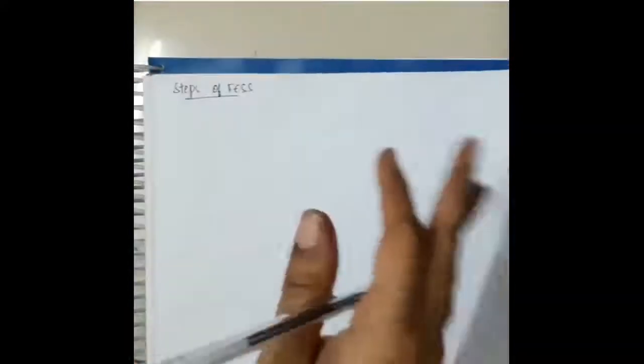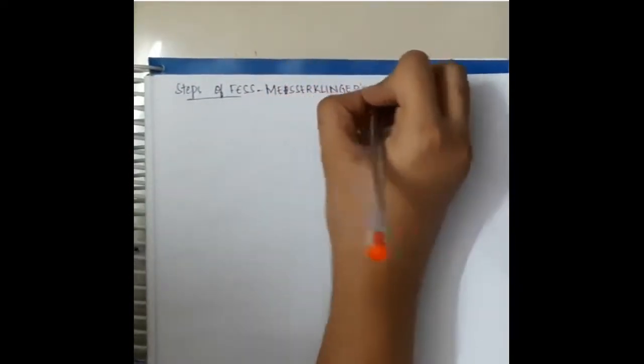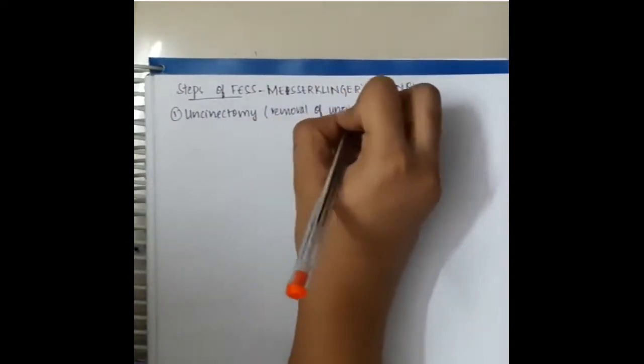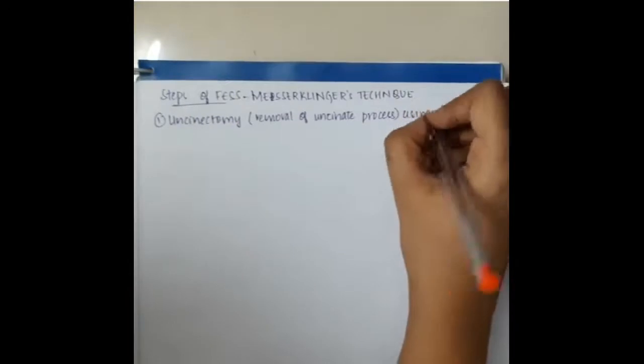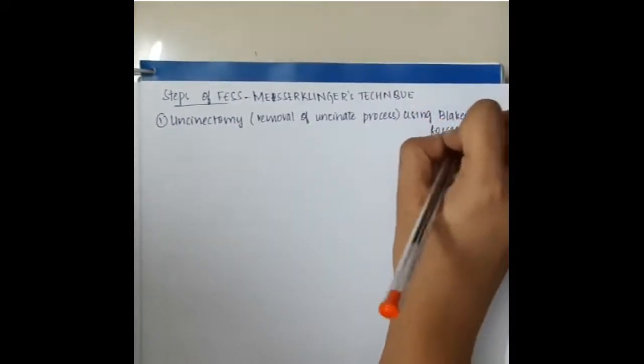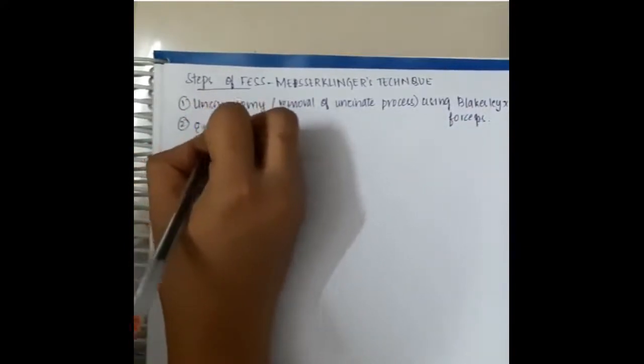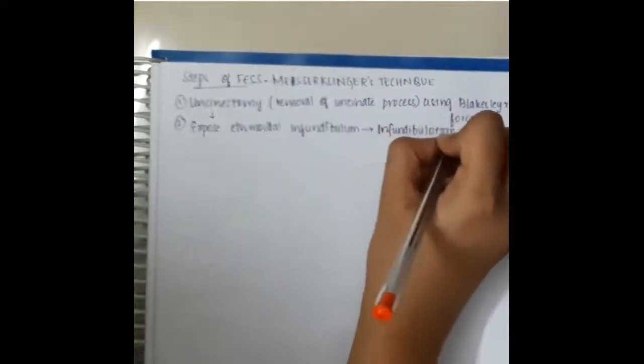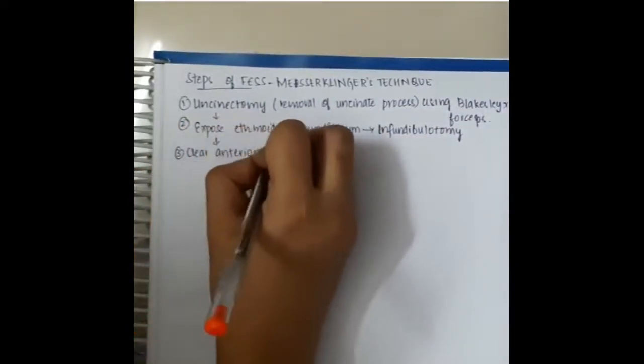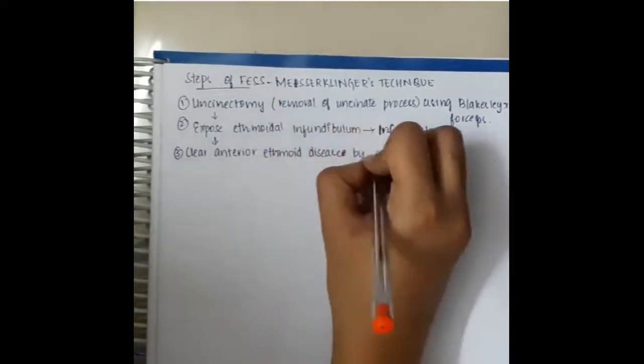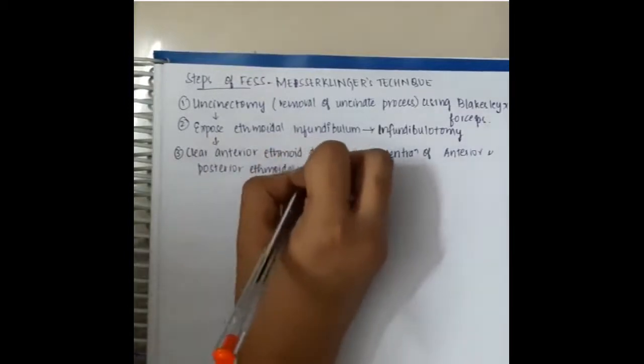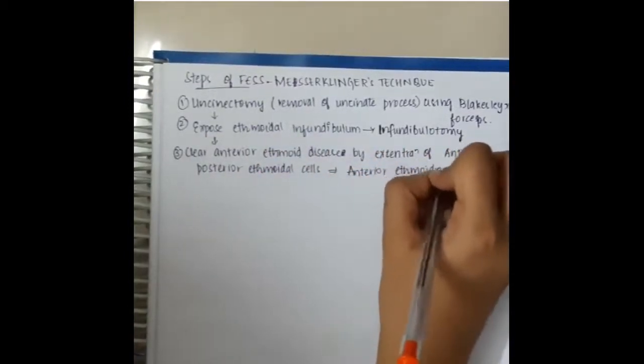Steps of functional endoscopic sinus surgery include the Messer-Klinger technique. First, we do uncinectomy and remove the uncinate process using Blakesley forceps, and then we will expose the ethmoidal infundibulum. After uncinectomy, we will expose the ethmoidal infundibulum which is called infundibulotomy. Third, we will clear the anterior ethmoidal disease by exenteration of anterior and posterior ethmoidal cells. This is called anterior ethmoidectomy or posterior ethmoidectomy.